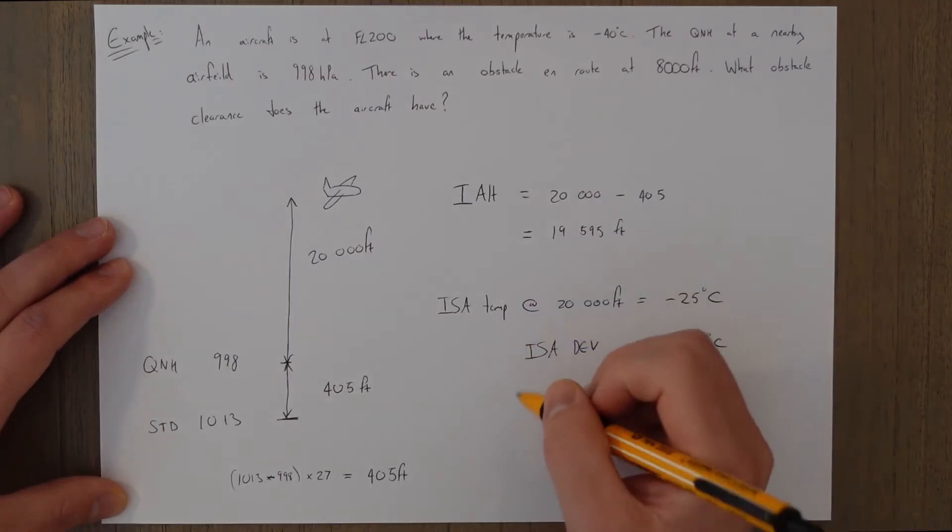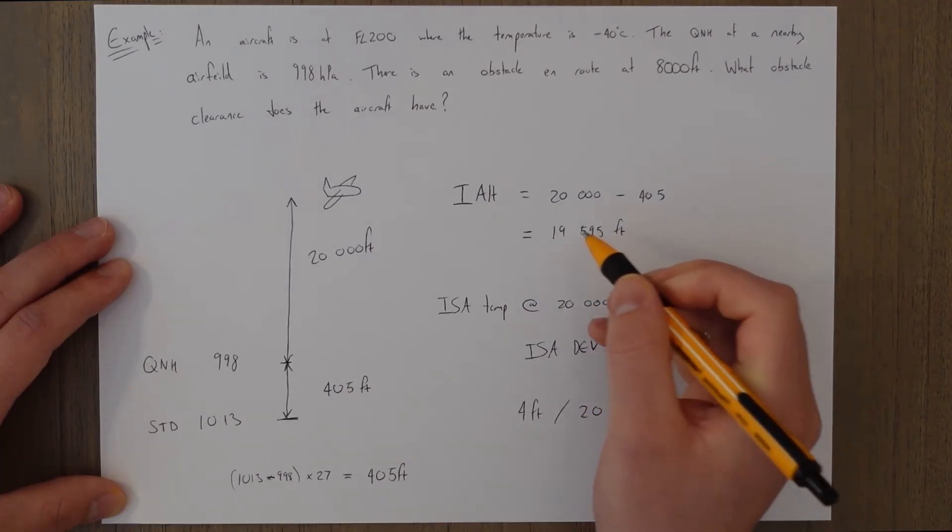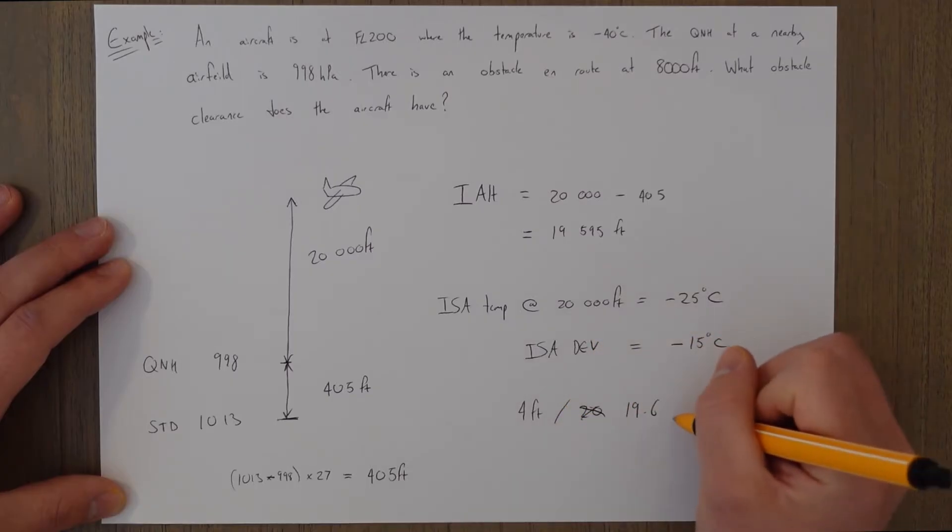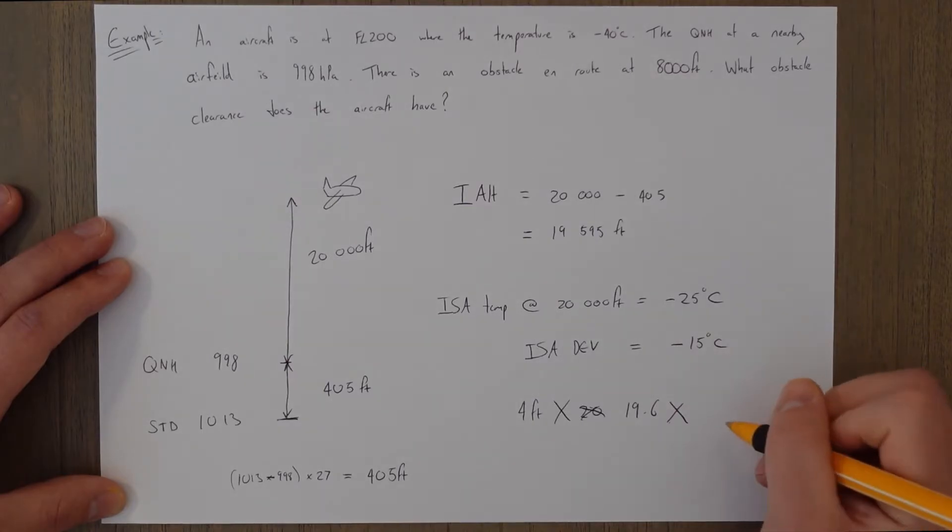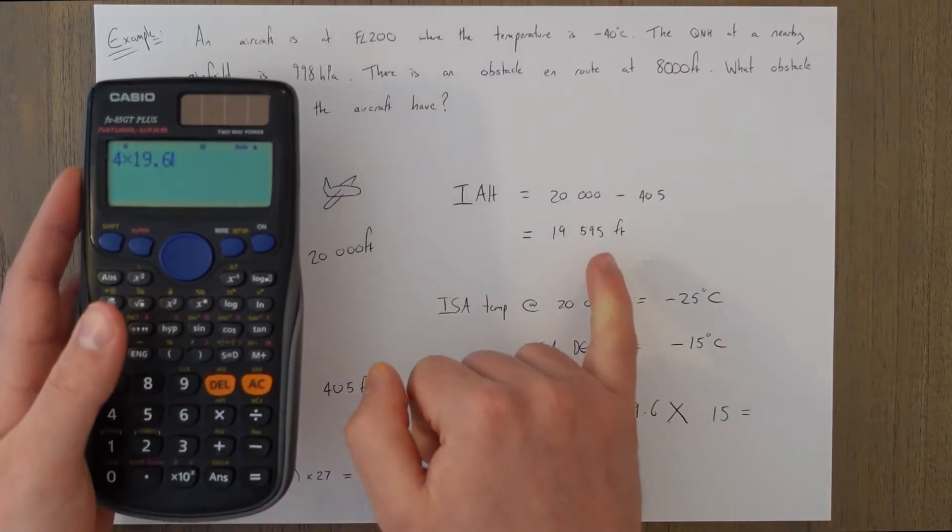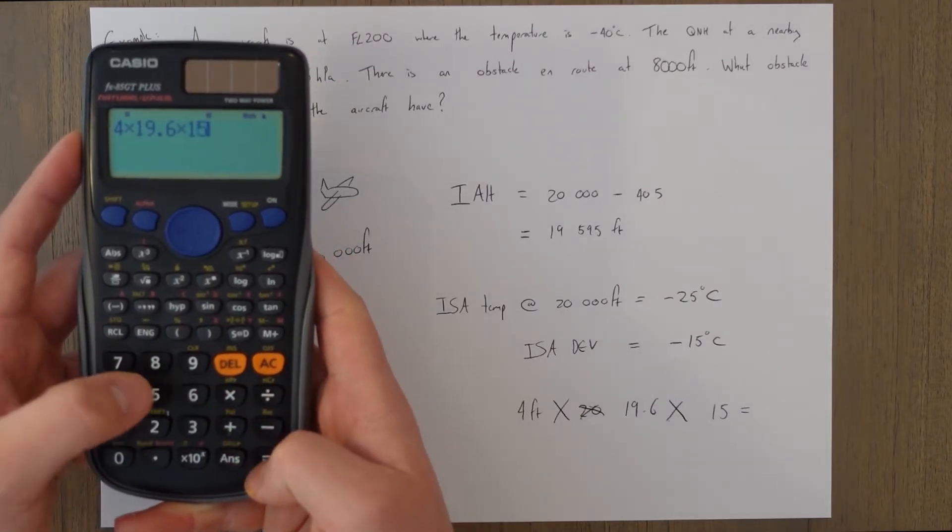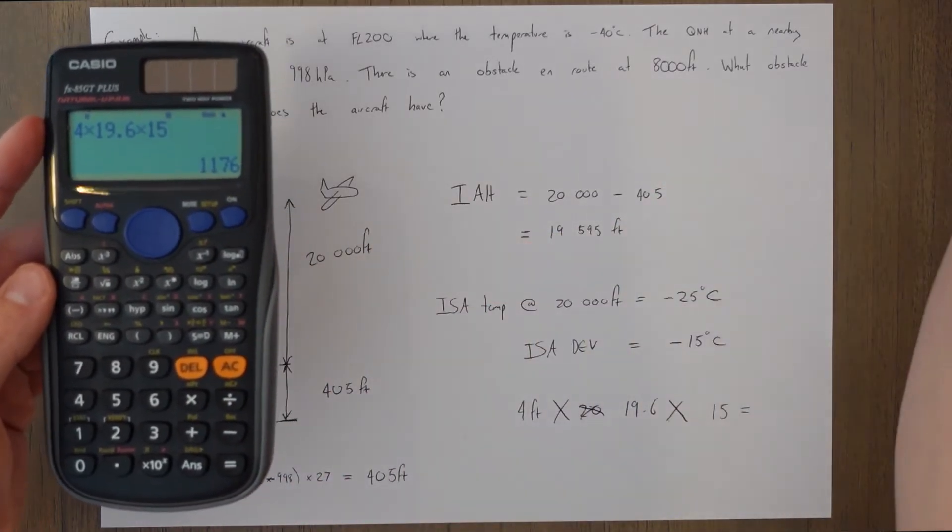And then we apply the temperature correction, so it's four feet for every thousand feet that we're above. So let's call that 20, or more accurately 19.6 I suppose, that's our indicated altitude. And then we multiply that by the 15 degrees. Four times the 19.6 for our thousands of feet above the QNH, times that by our ISA deviation 15, and that's 1176.